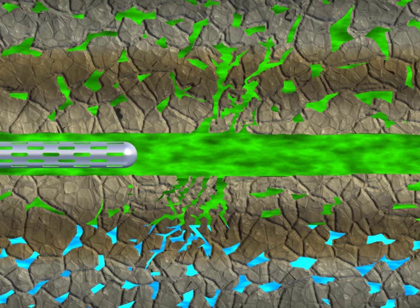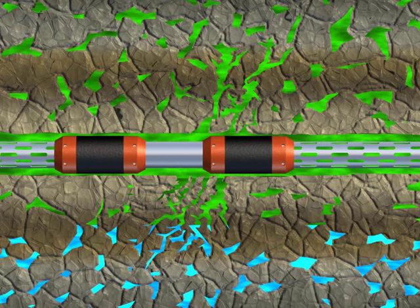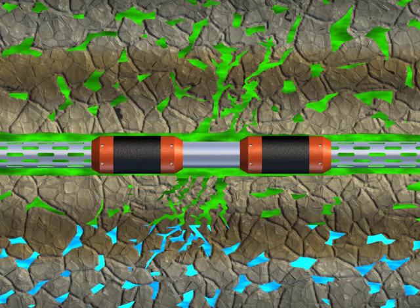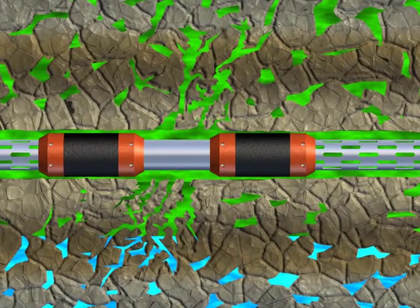To examine this in more detail, the slotted liner completion is run in the wellbore with water-reactive FreeCaps positioned on either side of the high permeability section. Blank casing is run between the FreeCaps.